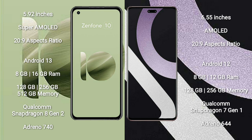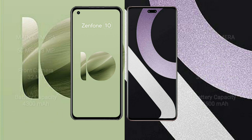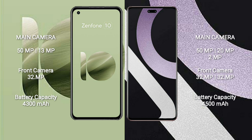Xiaomi CB2 comes with 8GB or 12GB RAM and 128GB or 256GB internal storage. It is powered by the Qualcomm Snapdragon 8 Gen 1 processor with GPU Adreno 730.